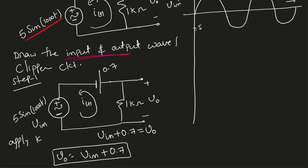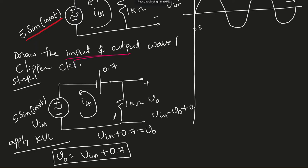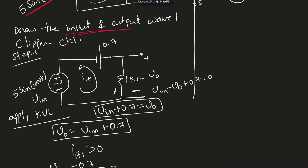Applying KVL in the loop: entering the positive terminal, take that as V_in — V_in is a voltage gain; the resistor always consumes energy so that's a voltage drop. When entering the positive terminal take that on one side, entering the negative terminal take that as the other side. So: V_in minus V_naught minus 0.7 equals zero. Therefore V_naught equals V_in plus 0.7.